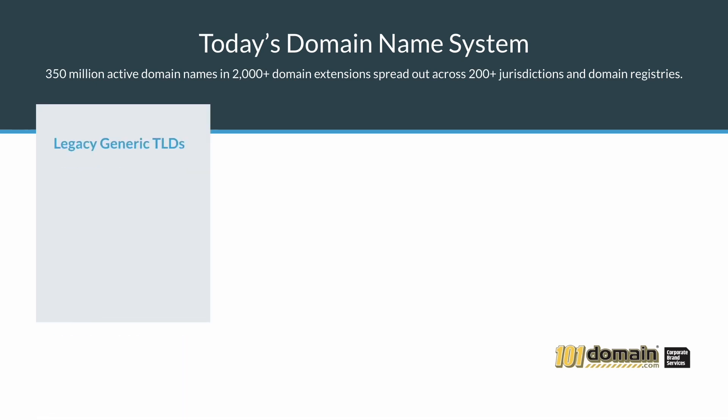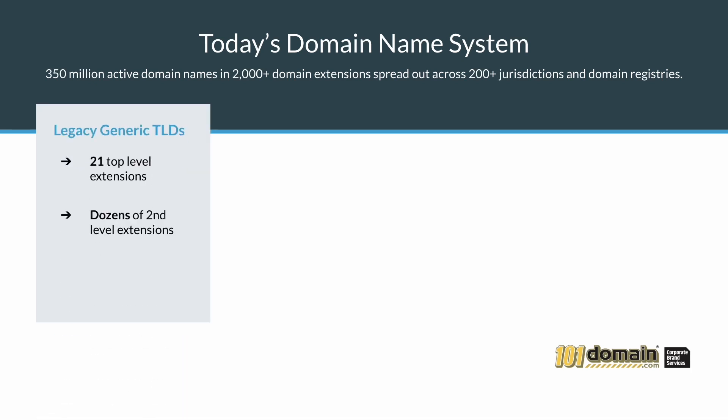Legacy generic TLDs are the original 21 domain extensions that are considered generic because they do not belong to any particular country based on two-digit country ISO codes. There are a few dozen sub- or second-level extensions. Legacy generic domains include .com, .net, .org, and so on.